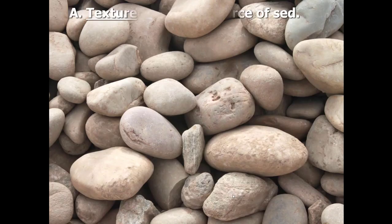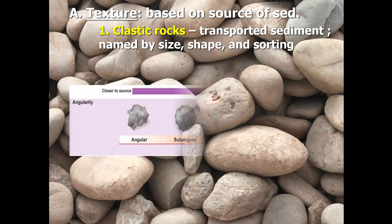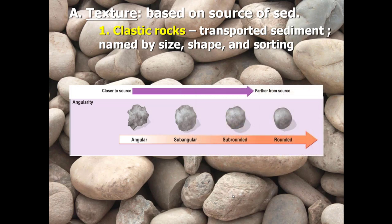Sedimentary rocks have two main textures based on the source of the sediment. In this mini lecture, we're going to learn about clastic rocks, which your textbook also calls detrital rocks. Clastic rocks are fragments of pre-existing rock that get cemented together, and those particles have often been transported from their original source area. Clastic sedimentary rocks are named based on particle size, particle shape, and how well sorted the particles are.